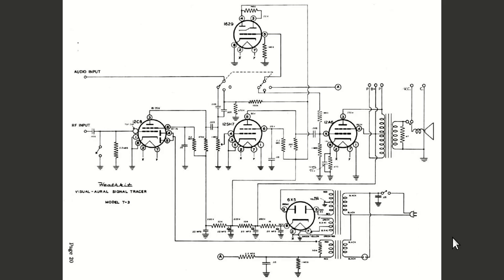Before we begin, I want to go over this a little bit. Some of you who have Heathkit equipment know that Heathkit often sourced parts from surplus dealers in order to make their kits a little bit more inexpensive. There's nothing wrong with the tubes that they use — it's just not your traditional tube lineup that you would see in something like this. But it works fine, and that's all you need.